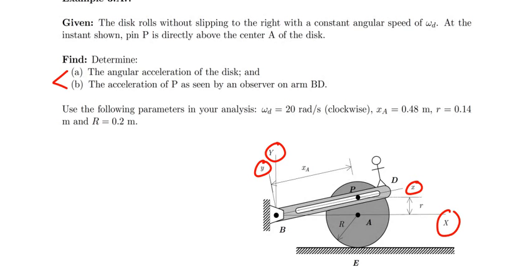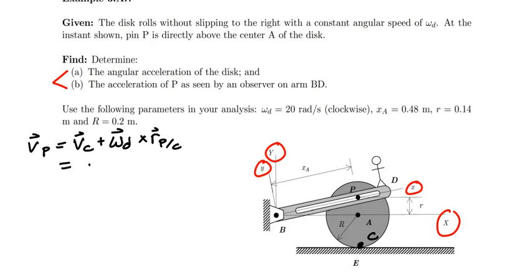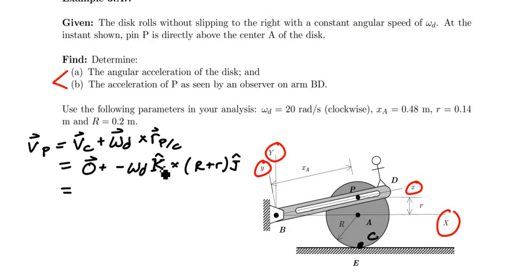Even though we're asked to only determine angular acceleration and acceleration, I'm going to start by computing velocities because I need those first. The velocity of point P equals the velocity of point C — defined at the bottom of the disk, where rolling without slip gives zero velocity — plus omega_d vector cross r of P with respect to C. Omega_d is minus omega_d in the capital K direction, crossed with the position (R plus r) in the capital J direction, giving omega_d times (R + r) in the capital I direction.